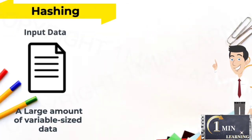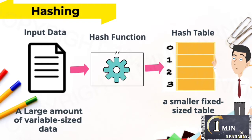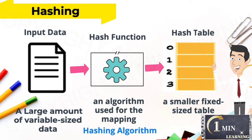Hashing is the process of mapping a large amount of variable-sized data to a smaller fixed-sized table via a hash function. A hash function is an algorithm for the mapping, also called a hashing algorithm. A hash table is a data structure which stores data in an associative array format for quick insertion and searching.